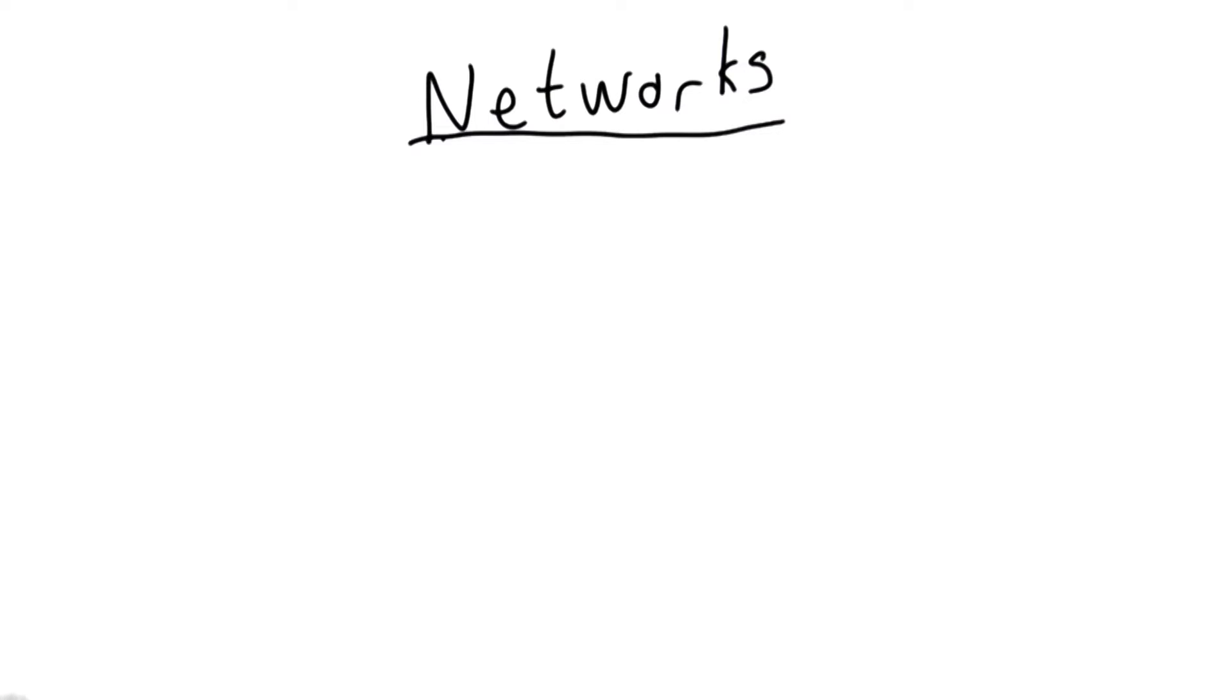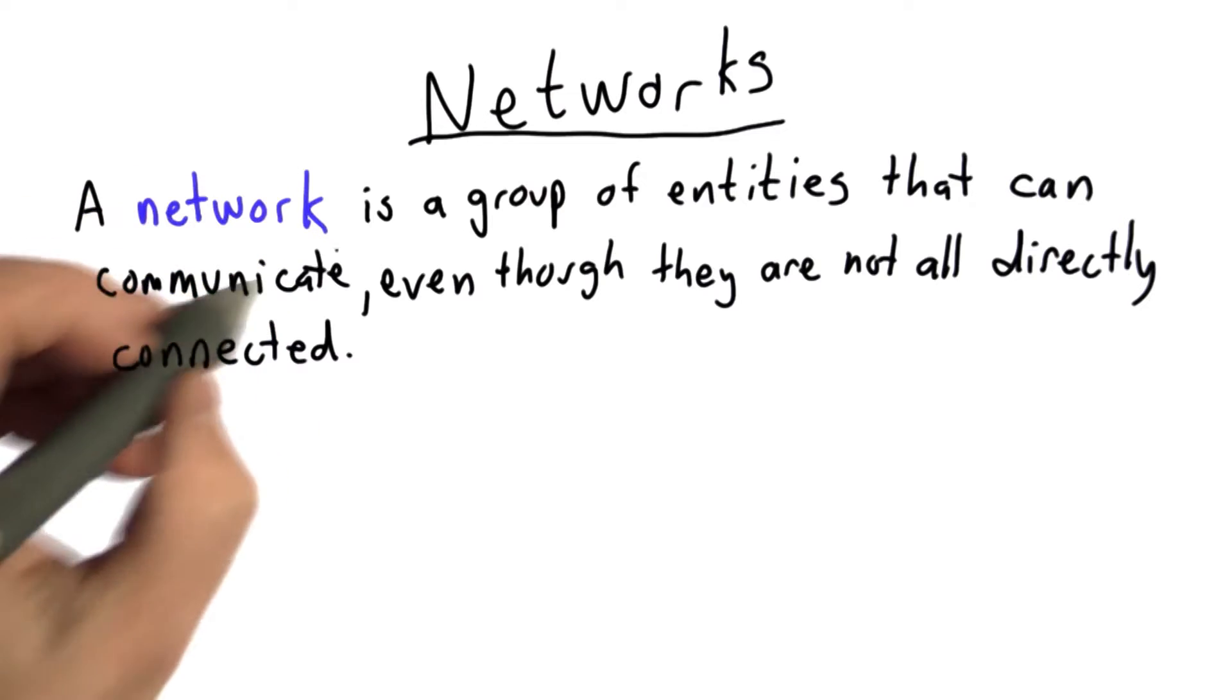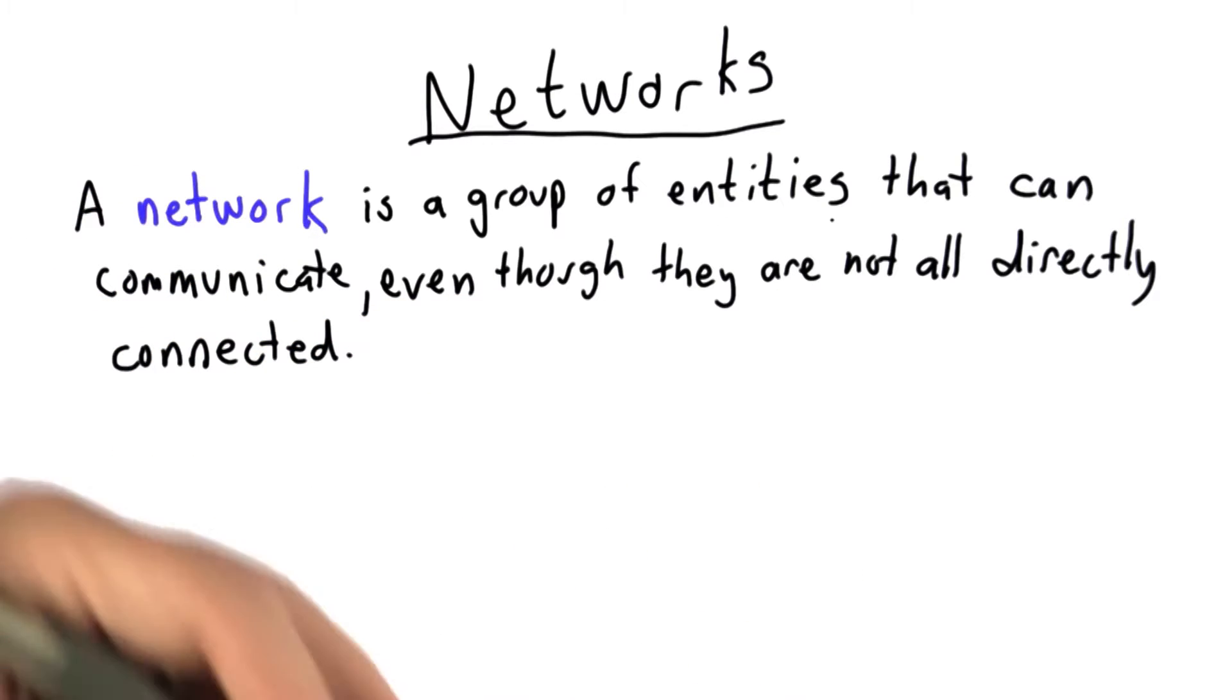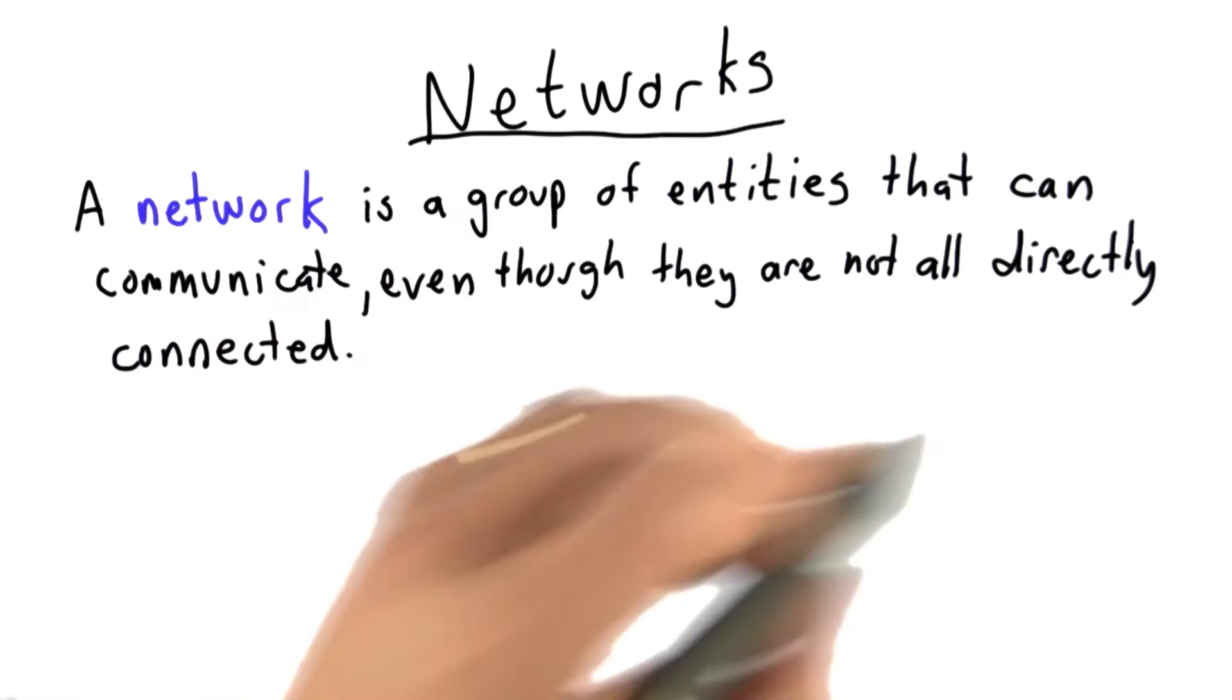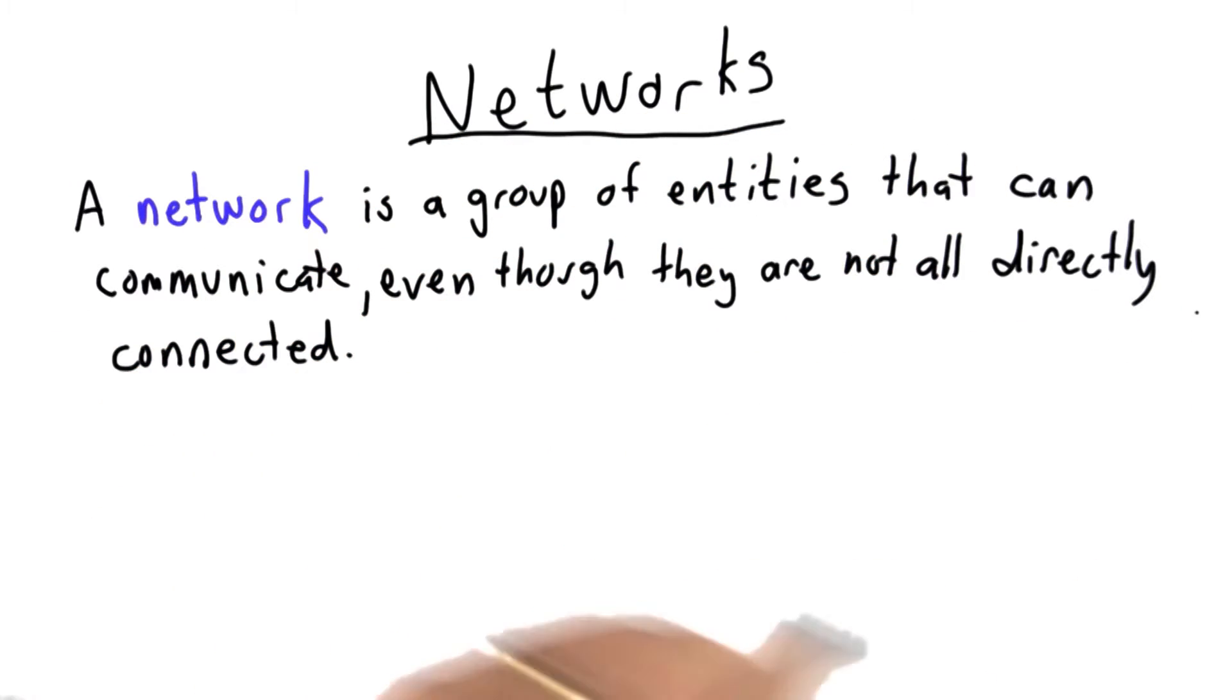There are lots of different ways to define a network. We're going to use quite a precise definition. So we're going to define a network as a group of entities, and the entities could be people, they could be computers, they could be organizations, they could be governments, that can communicate even though they're not all directly connected.